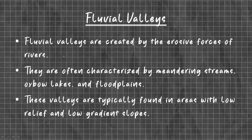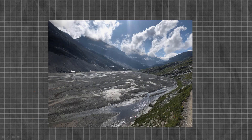Fluvial valleys are created by the erosive forces of rivers. They are often characterized by meandering streams, oxbow lakes, and floodplains. These valleys are typically found in areas with low relief and low gradient. As you can see in this picture, these are mountains and this is a river which creates fluvial valleys.